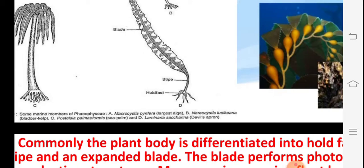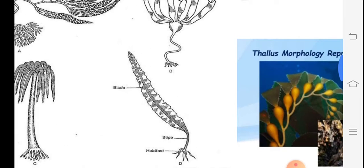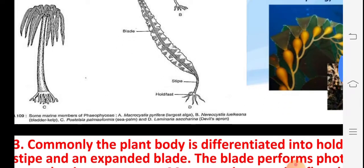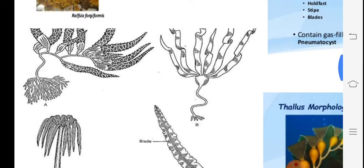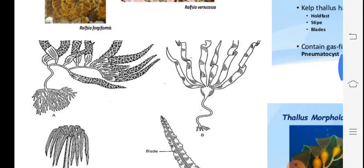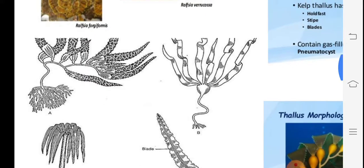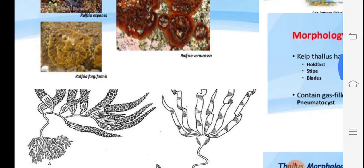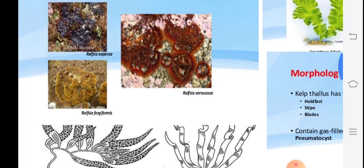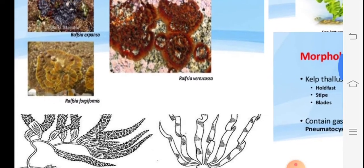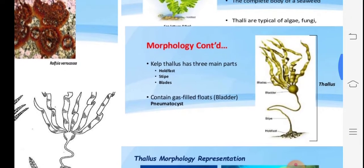The display diagram shows Postelsia palmiformis, commonly called the sea palm — you can observe it looks like a sea palm. Then there is Macrocystis and Nereocystis, shown in photographs A and B. Ralfsia is one genus that generally shows a mushroom-type fungal occurrence.